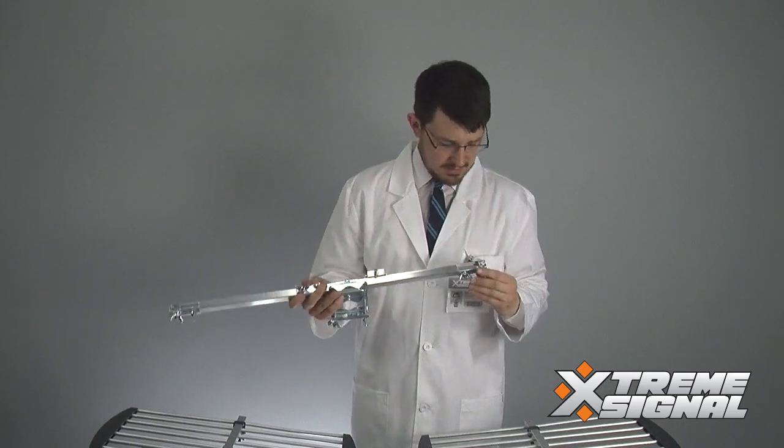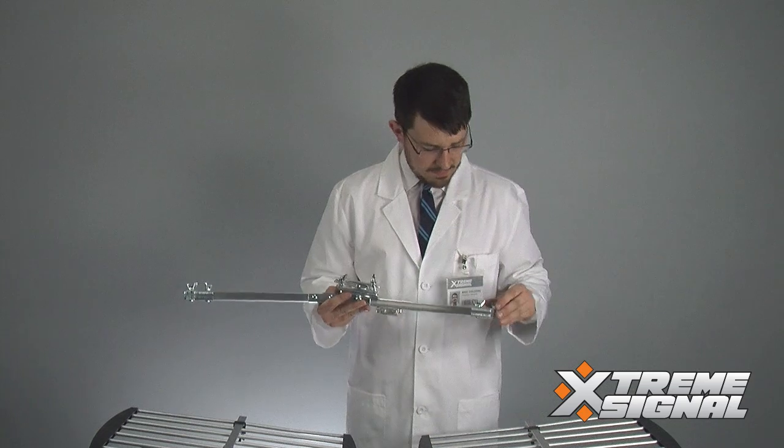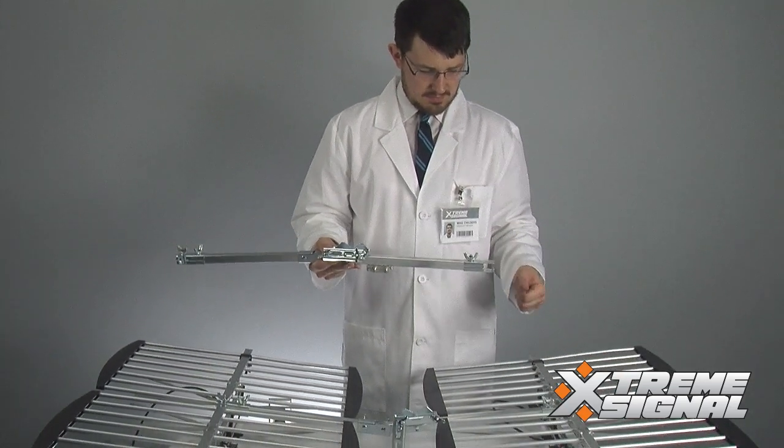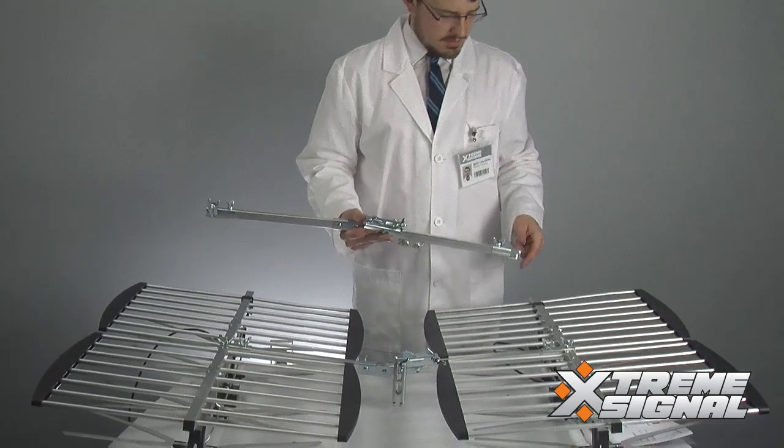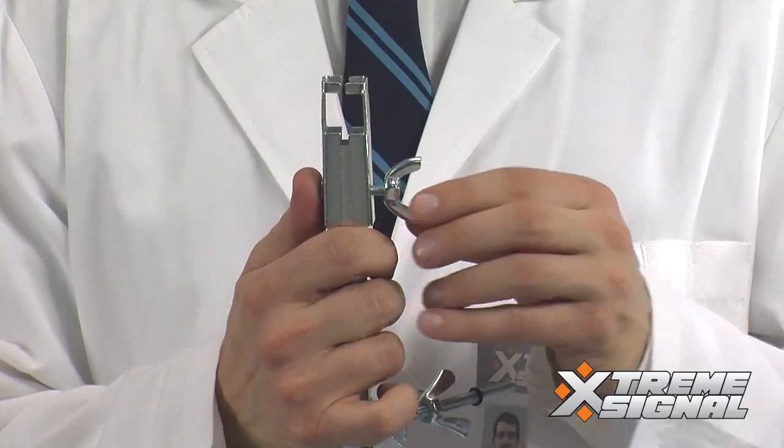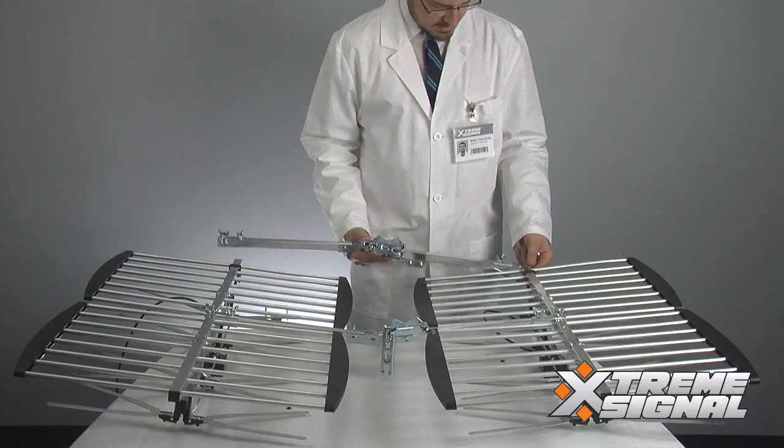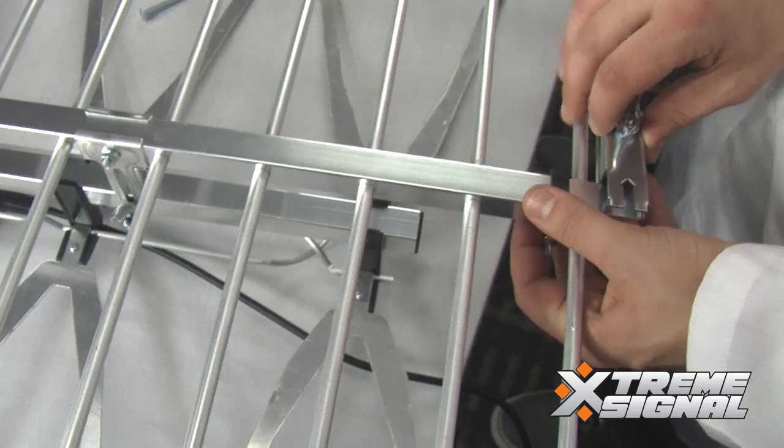And then next, just like we did with the first clamp, we're going to do the same thing here on the bottom of the antenna. Alright, we're going to remove that wing nut and open this up so the clamp is nice and wide. Put it right at the bottom of the antenna.